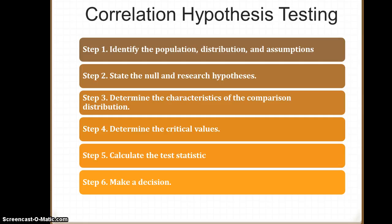These are our six steps: identifying the population, distribution, and assumptions; stating our null and research hypotheses; determining the characteristics of the comparison distribution; finding our critical values; calculating the test statistic; and making a decision about the null hypothesis.